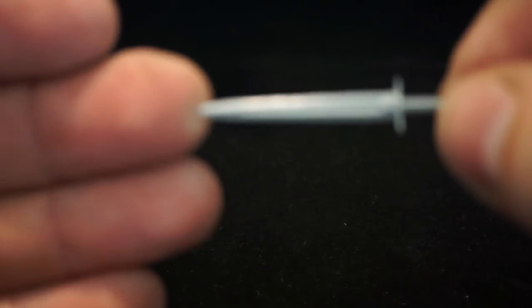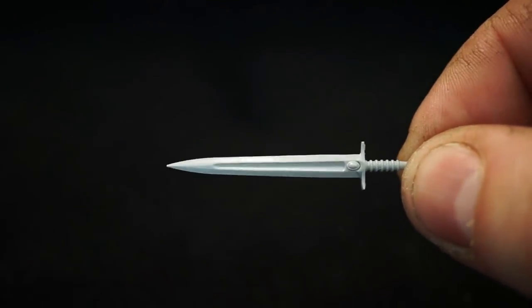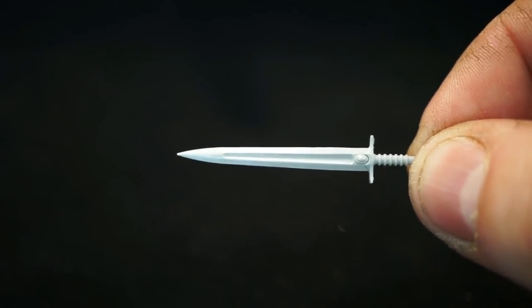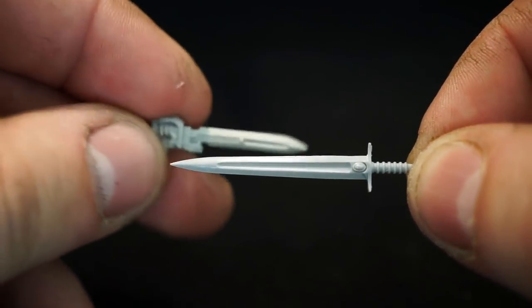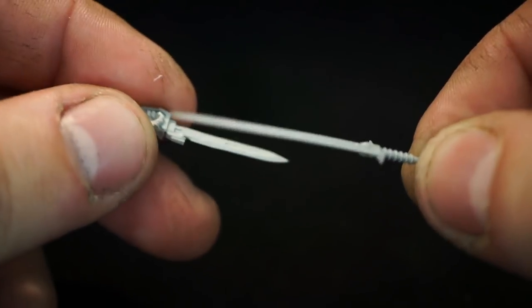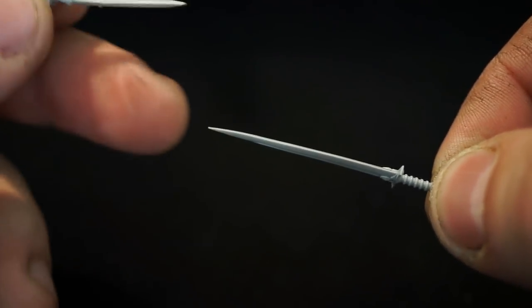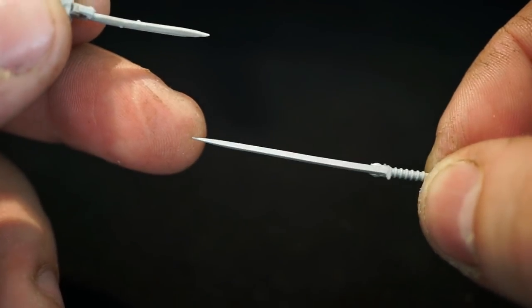This one here would definitely be something like a Calibanite Warblade or Calibanite longsword. It's big. So yeah. There's a comparison with the Forge World one. And side on. Pretty damn straight. Straight out the packet.